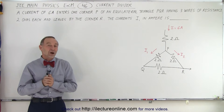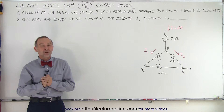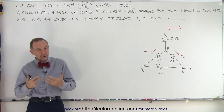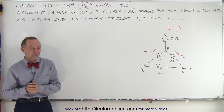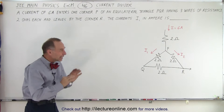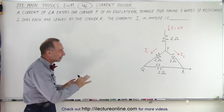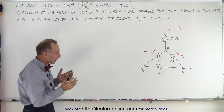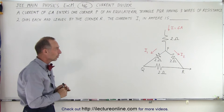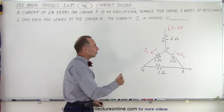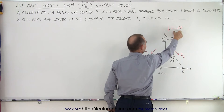Welcome to our lecture online. Our next problem from the JEE main test deals with a circuit, and in particular a current divider circuit. Even though they kind of have it set up as a delta circuit, you might start thinking about delta to Y conversion — that's not at all what it is. It's simply a circuit where we have current entering right here: 6 amps of current.